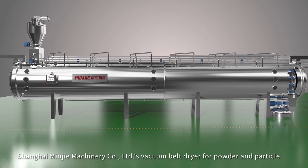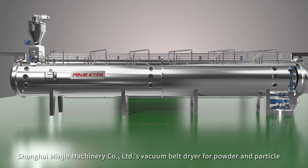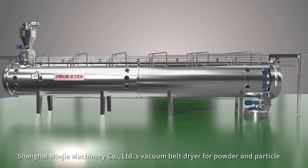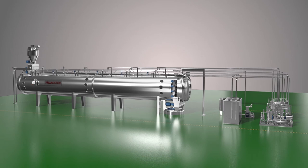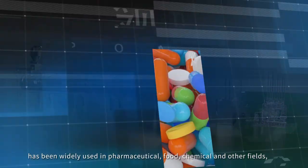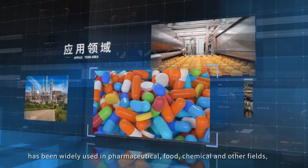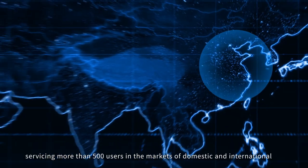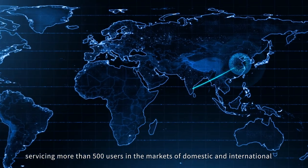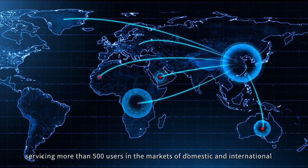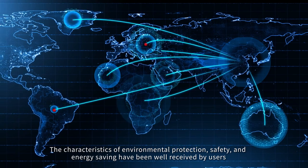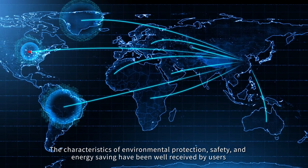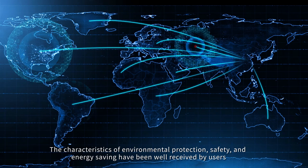Shanghai Minji Machinery Co., Limited's vacuum belt dryer for powder and particle has been widely used in pharmaceutical, food, chemical, and other fields, servicing more than 500 users in the markets of domestic and international. The characteristics of environmental protection, safety, and energy saving have been well received by users.